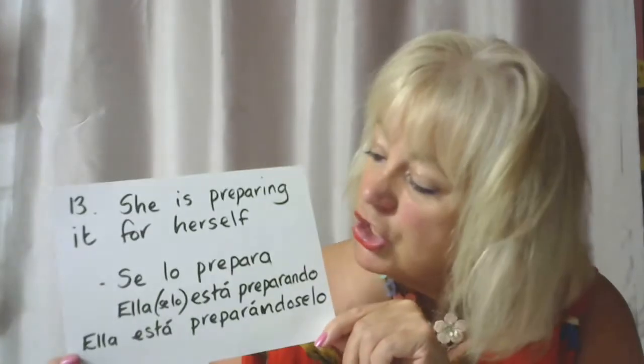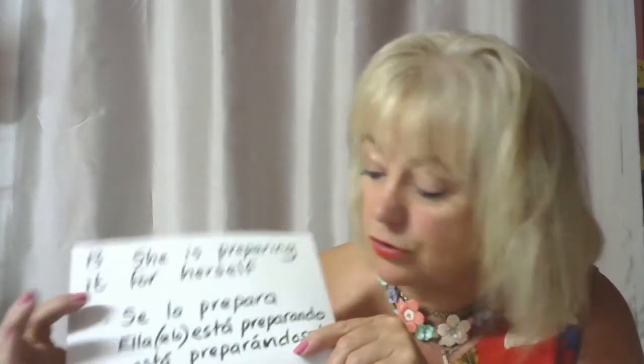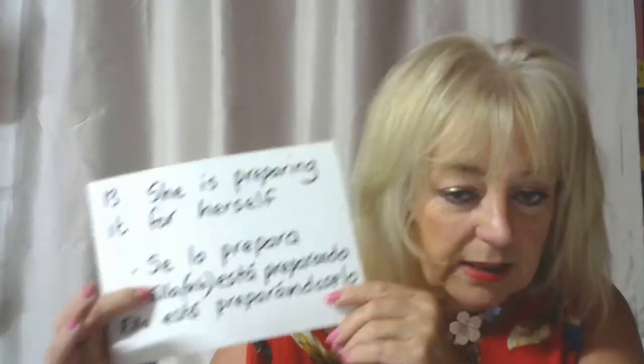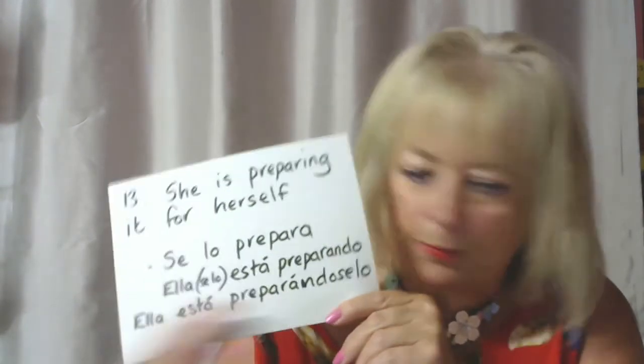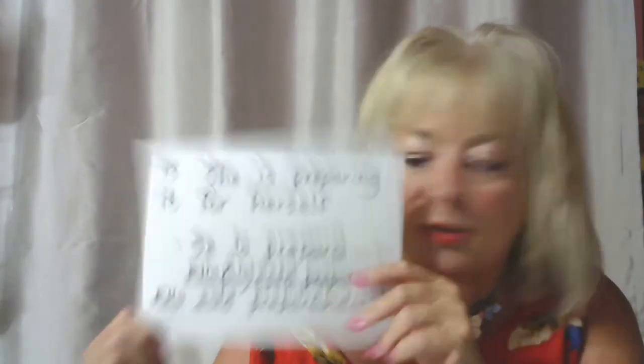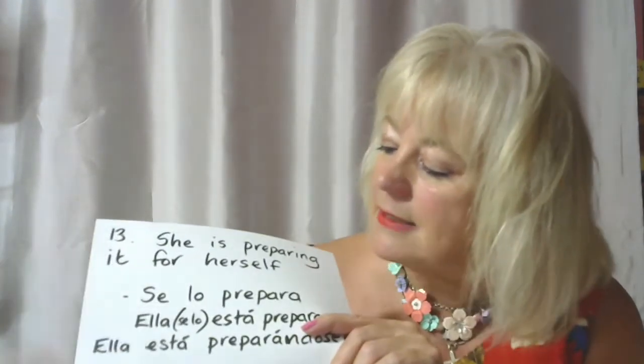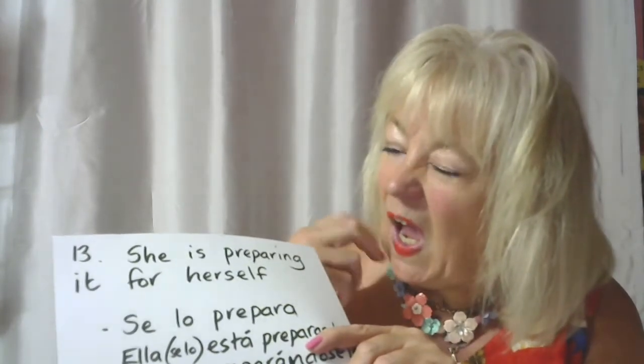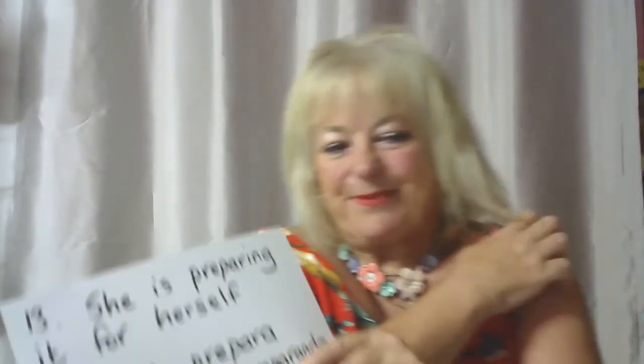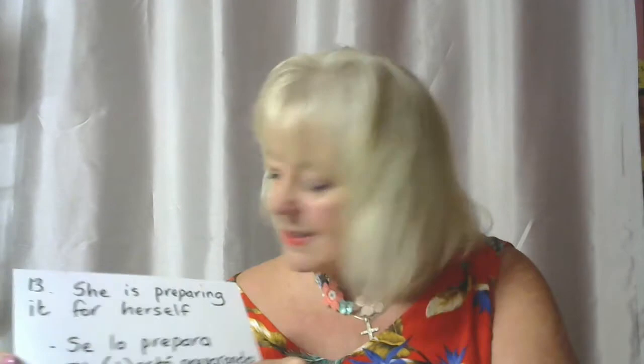Number thirteen: She is preparing it for herself. Se lo prepara. Ella se lo está preparando, o ella está preparándoselo. She is preparing it for herself. 'She' — the person; 'is preparing' — present progressive; 'it' — the direct object; 'for herself' — indirect object. Notice we don't say 'she is preparing it for her' — we tend to say 'herself'. Number fourteen: Él se los compraba. He used to buy them for himself.